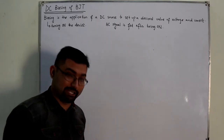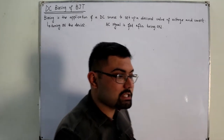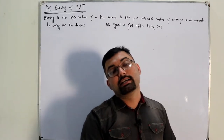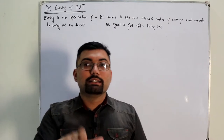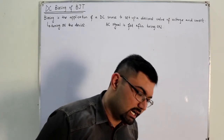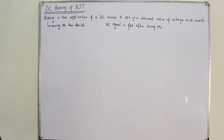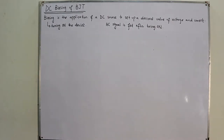Applying DC voltage to a desired value of voltage and current gives you an operating point. At the operating point, the sinusoidal input is applied and the signal oscillates around it. Both DC and AC responses are necessary and can be analyzed separately. Biasing establishes this operating point.